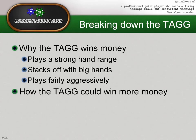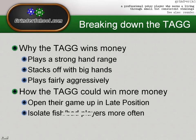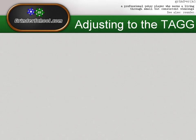There are also ways the tag could certainly make more money. The biggest thing is they need to open their game up in later position — they play way too tight from the cutoff and button, which doesn't put them in as many profitable post-flop spots as they could be in. They'd rather minimize variance and continue their tight style. Another point is they could be isolating fish a lot more often. Too many tags lose the battle for the fish's money, whereas we should be trying to take pots in position heads up with the fish the majority of the time.